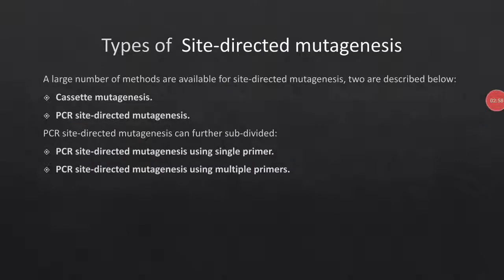Site-directed mutagenesis is of two main types: cassette mutagenesis and PCR site-directed mutagenesis. PCR SDM can be further divided into two categories: PCR SDM using a single primer, and PCR SDM using multiple primers.